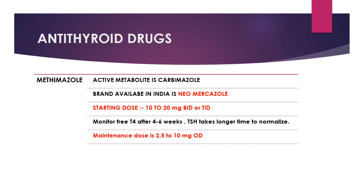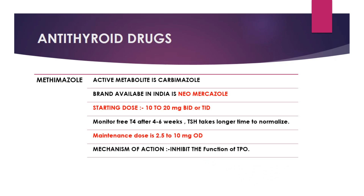Once TSH and T4 become normalized after a few weeks or months, we can give the maintenance dose of carbamazole, which is 2.5 to 10 mg once daily. The mechanism of action of carbamazole is that it inhibits the function of thyroid peroxidase (TPO).